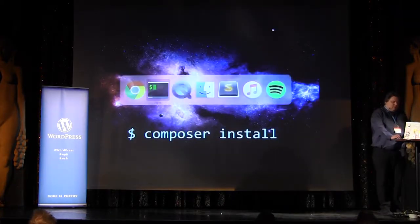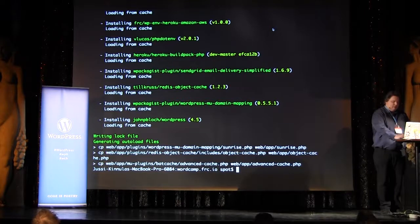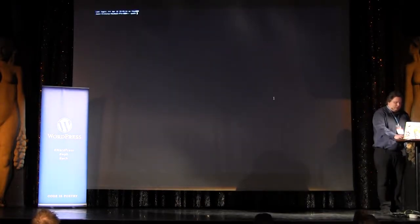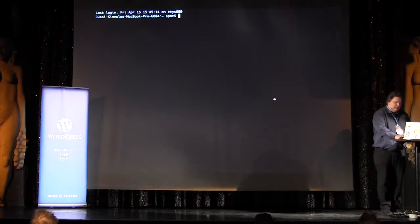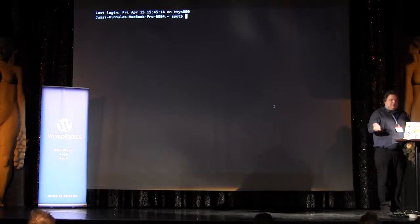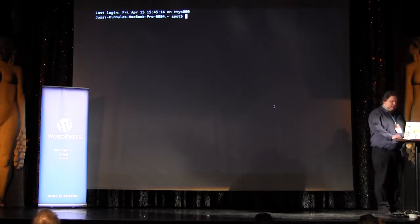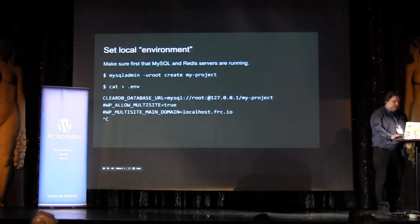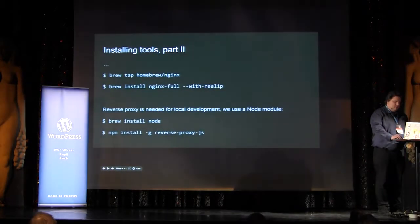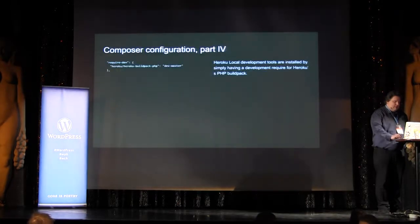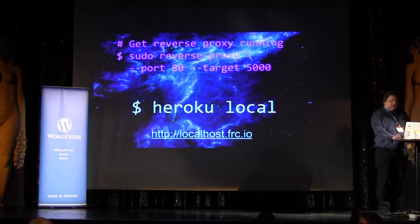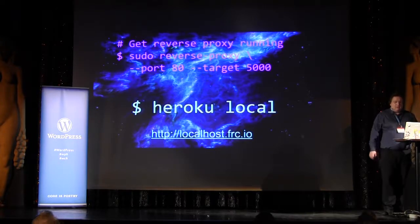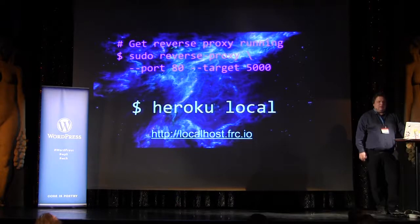Composer install is done now — loads of stuff installed. I can run this local Heroku environment, which is part of the Heroku buildpack that was installed. Now I need to add the reverse proxy. The reason I need it is related to multisite: WordPress multisite with subdomains can't use any custom port — you can use regular HTTP or HTTPS but not a custom port like port 5000 which I normally use locally.